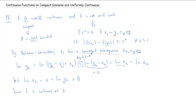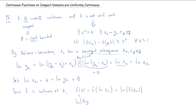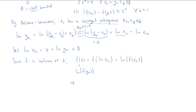By the sequential characterization of continuity, since f is continuous at z, we have f(z) = limit of f(xₙ·) and similarly f(z) = limit of f(yₙ·). Both limits exist and equal f(z), so the limit of f(yₙ·) - f(xₙ·) equals zero.